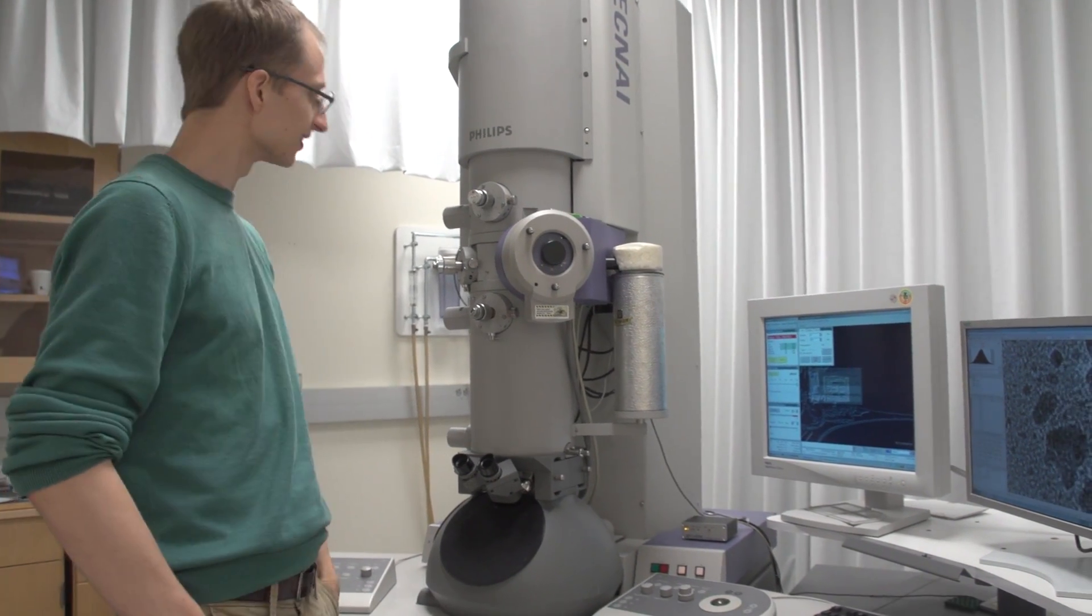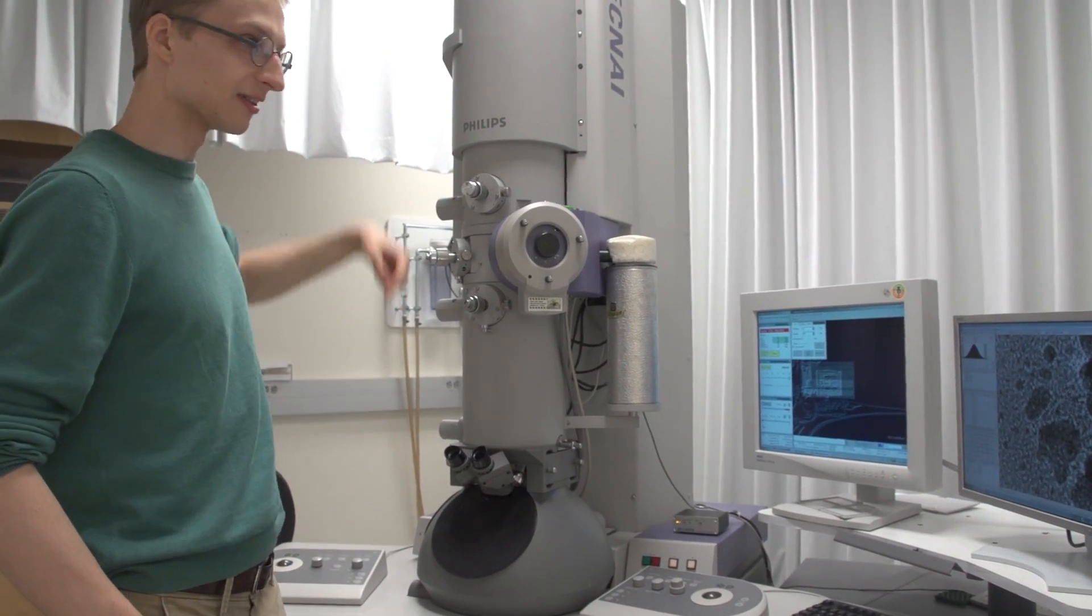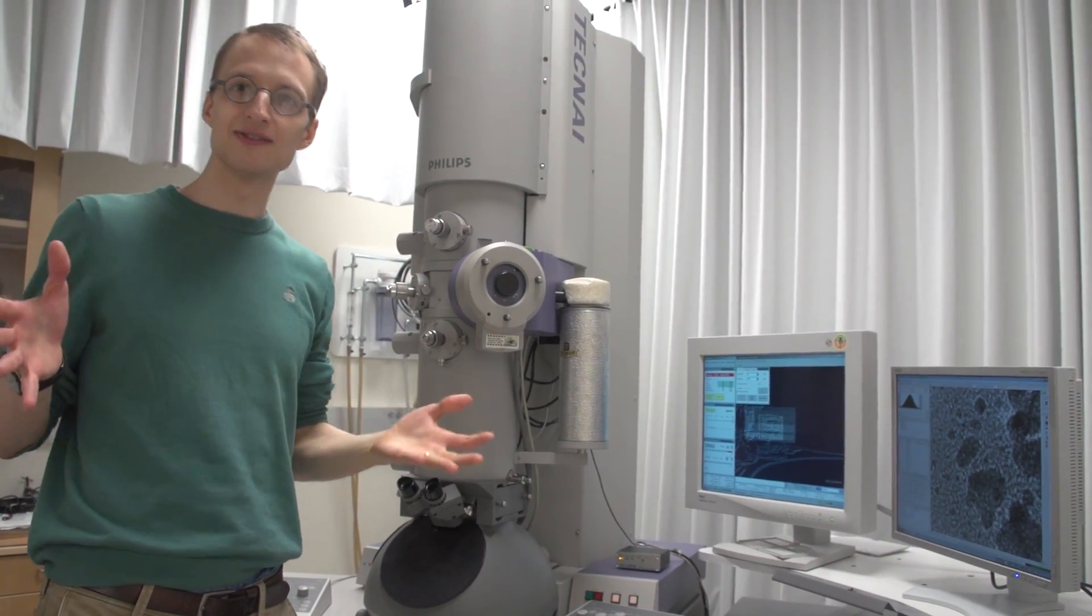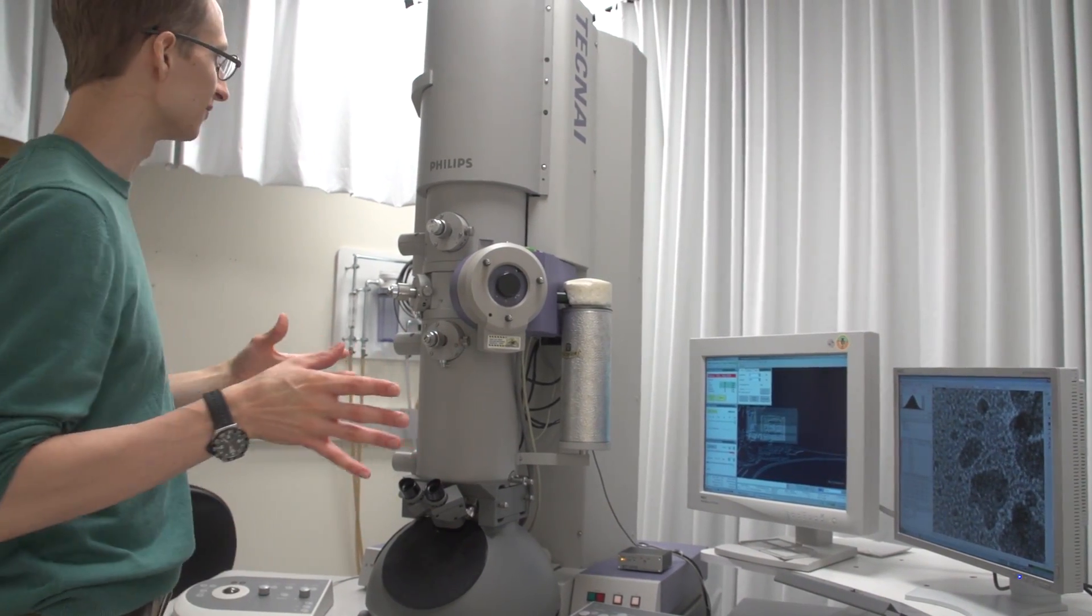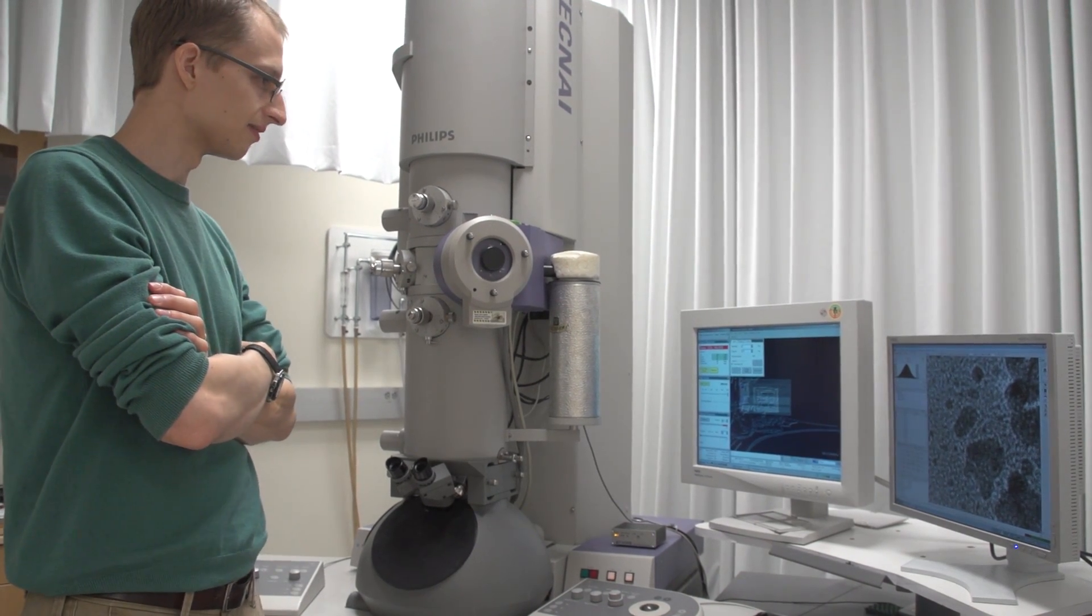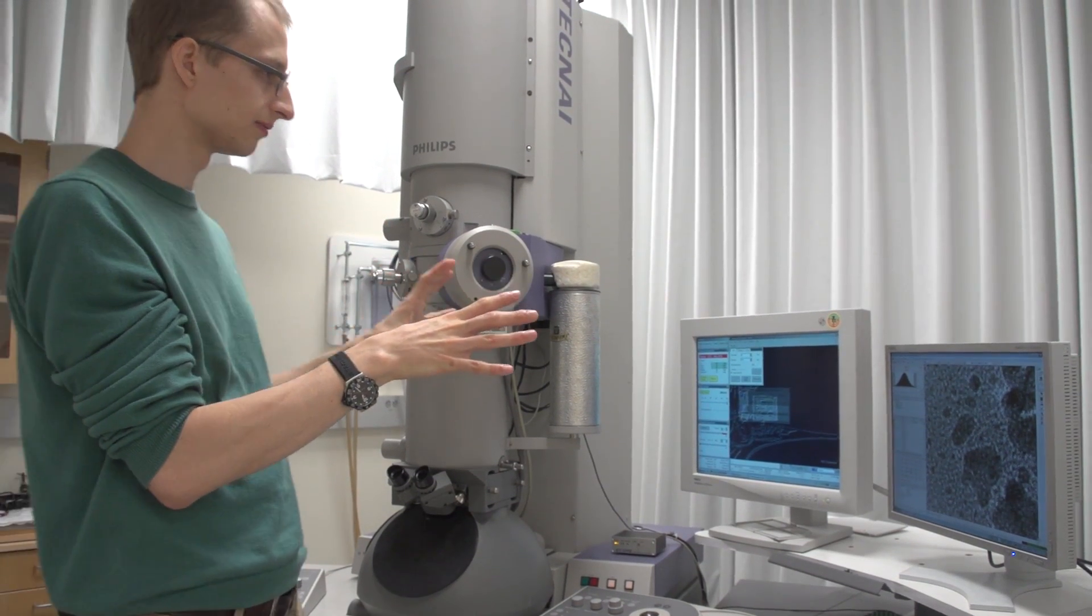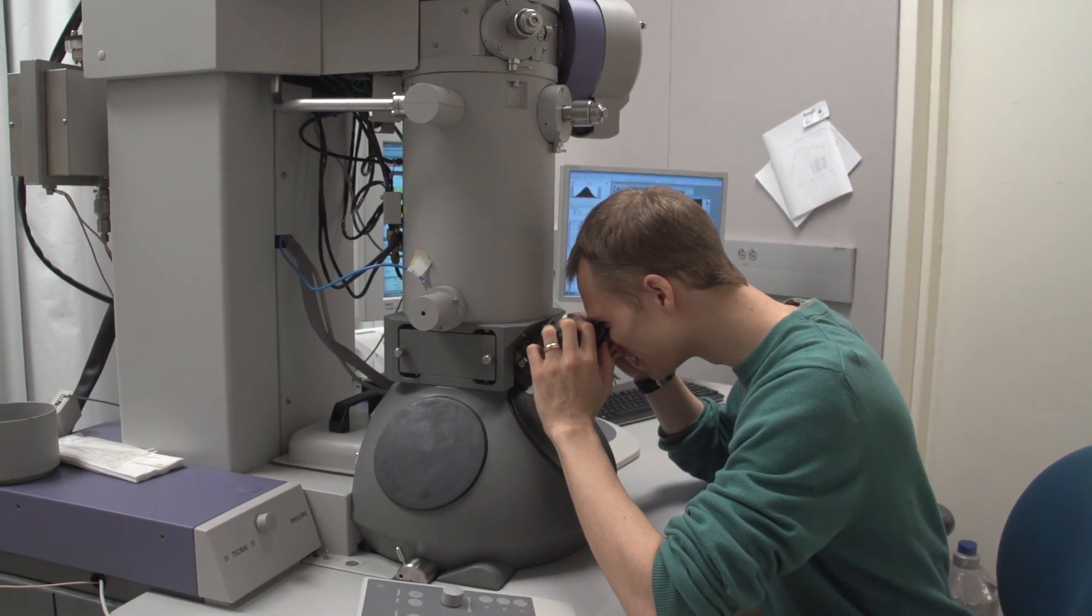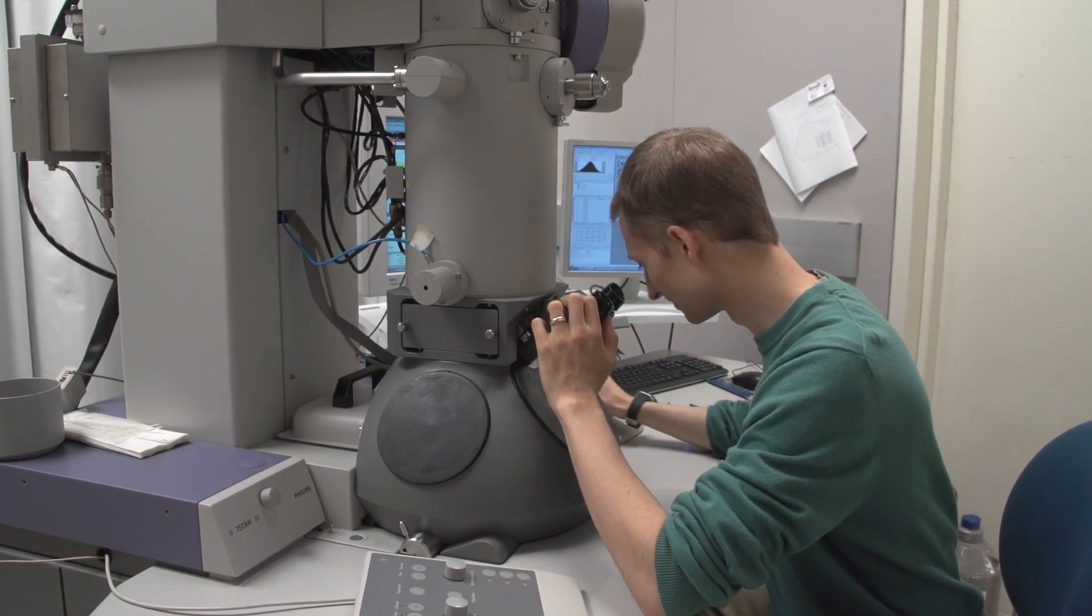Basically what it is is a tube that shoots electrons through it really fast, at relativistic speed. These things are moving pretty close to the speed of light. These are the computers that operate it and they control the image taking process and allow us to focus on different parts of the specimen, zoom in on it, and then take an image.